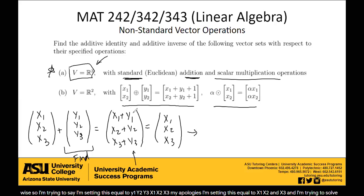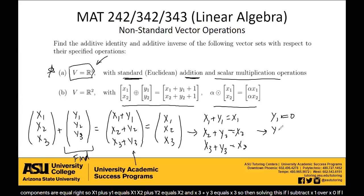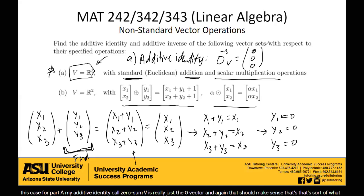When two vectors are equal, their components are equal. So x1 plus y1 equals x1, x2 plus y2 equals x2, and x3 plus y3 equals x3. Solving: y1 equals 0, y2 equals 0, y3 equals 0. So this vector I was trying to find is the zero vector. For Part A, our additive identity — the zero vector, 0 sub v — is just 0, 0, 0. That should make sense, since that's what we've been using as our additive identity with standard addition.